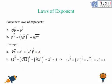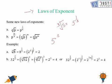Now we are going to learn some new laws of exponents. The first new law says the nth root of a number equals that number to the power 1 over n. For example, the cube root of 5 is equal to 5 to the power 1 third. The next law says if it is 5 to the power 2 over 3, we can write it as the cube root of 5, whole raised to the power 2.